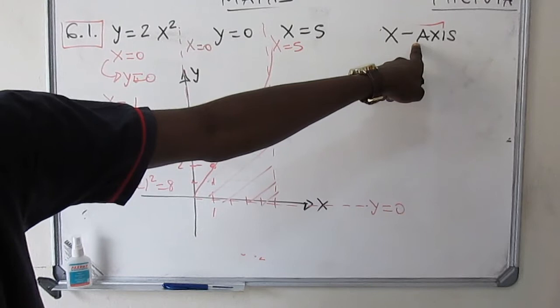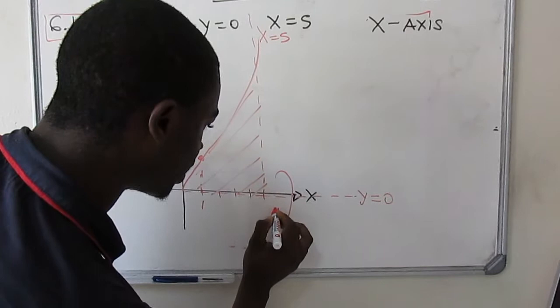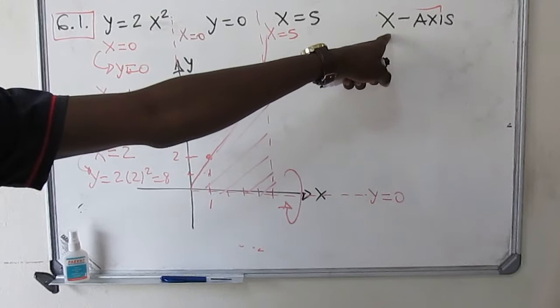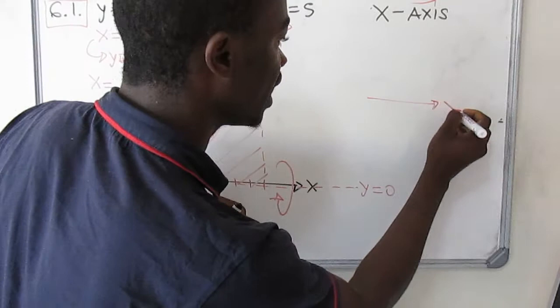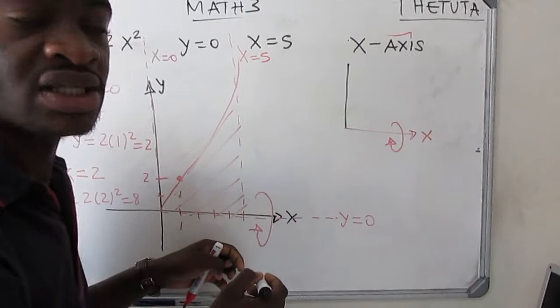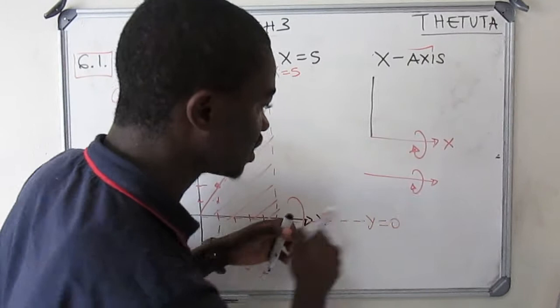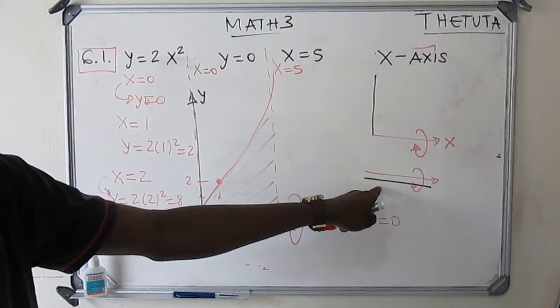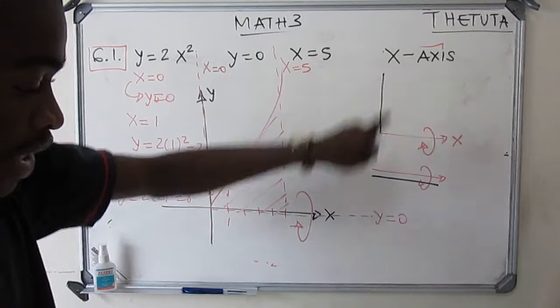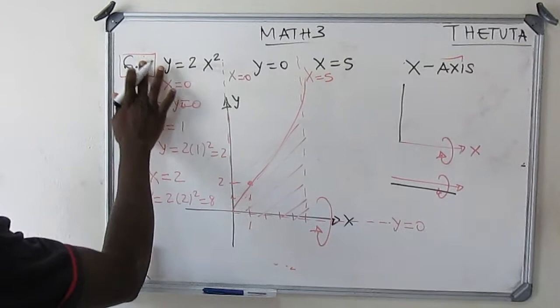Once we notice the shape of our function, they say this body is rotating on the x-axis. In order to apply shell method on the x-axis, the function must be revolved on the y-axis. But since our function is on the x-axis and the rotation is also on the x-axis, we cannot apply shell method here. So if you apply shell method to question 6.1, you won't get any answer.